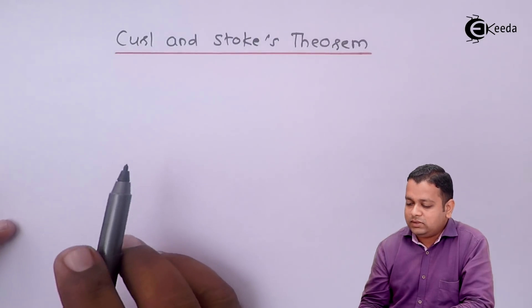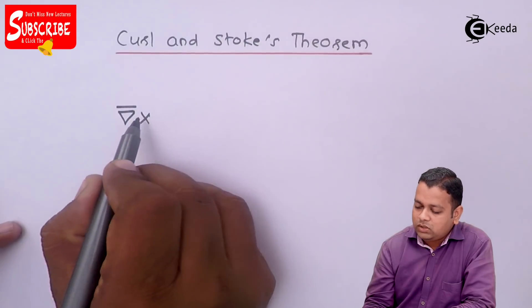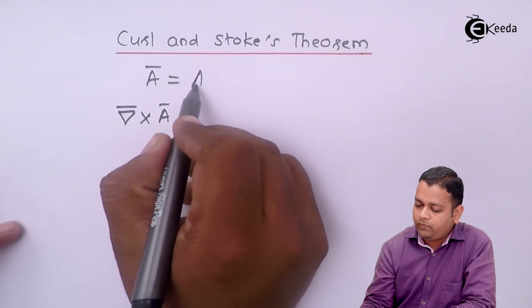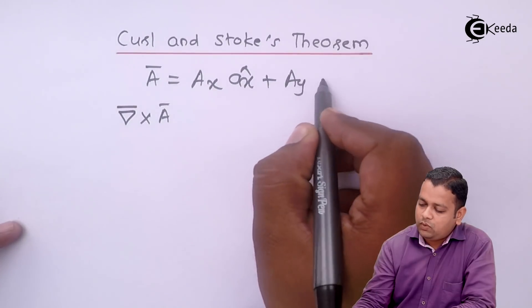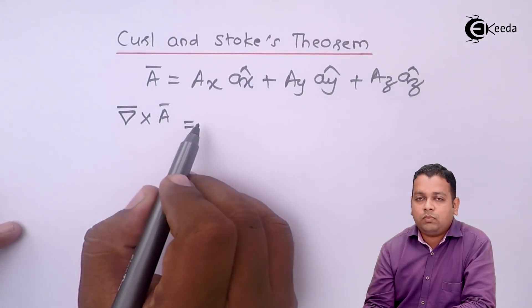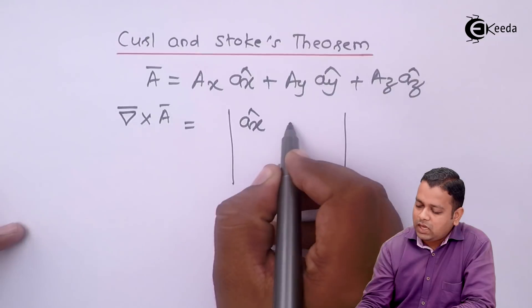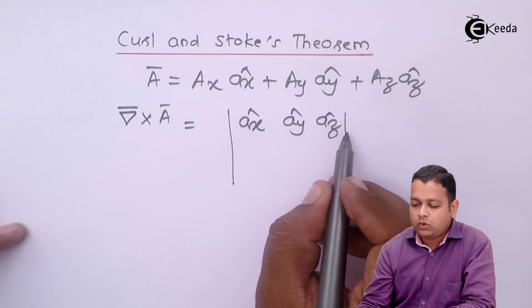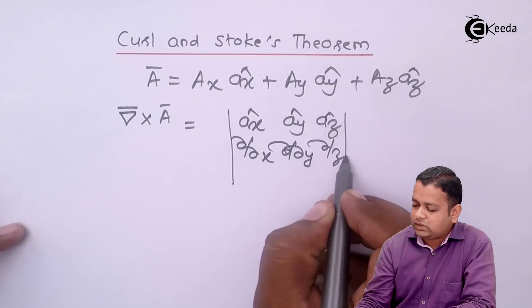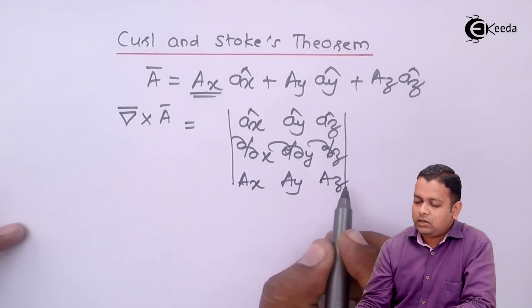In the first chapter on vector analysis, the curl was represented by the del operator with a cross symbol applied to any vector field A. If A is in the rectangular coordinate system — Ax x-cap plus Ay y-cap plus Az z-cap — we represent the curl, that is del-cross A, by a determinant with unit vectors Ax-cap, Ay-cap, Az-cap in the first row, partial differentiations with respect to X, Y, and Z in the second row, and coefficients Ax, Ay, Az in the third row.